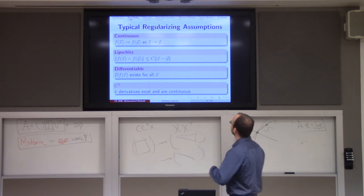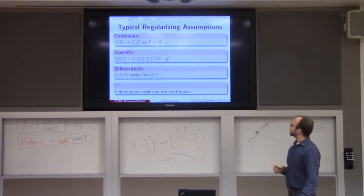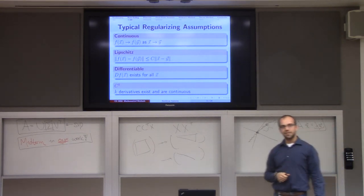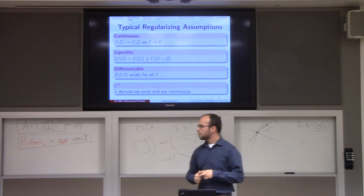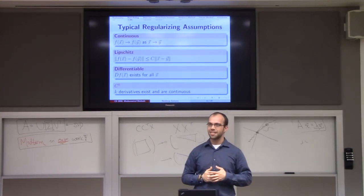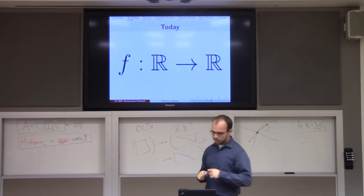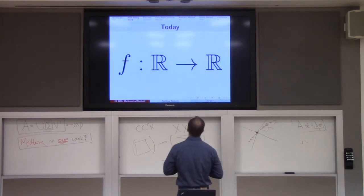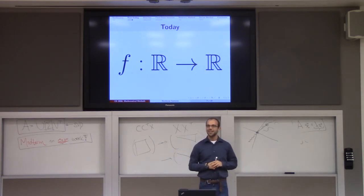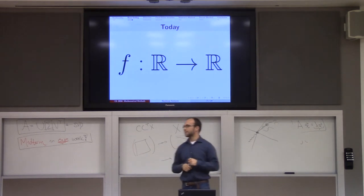You can see we have a list from the most generic to the most specific of different conditions we can put on a function to help our root finder have some guarantees about its behavior. Without any of these assumptions it's going to be really difficult to write an algorithm and say anything about it. So today we're only going to worry about functions from R to R — they take in one number and output one number — and that's already enough to see lots of important themes in root finding.